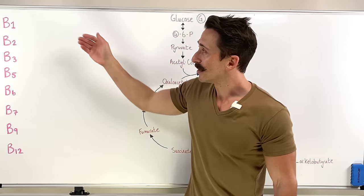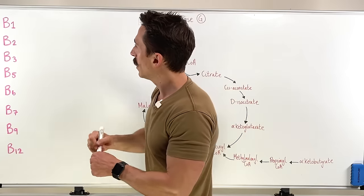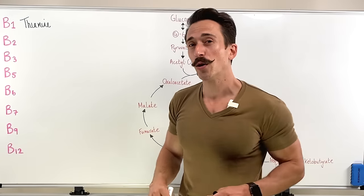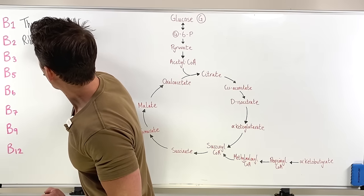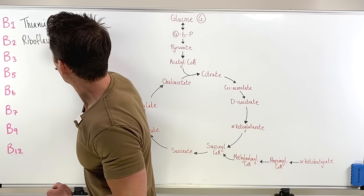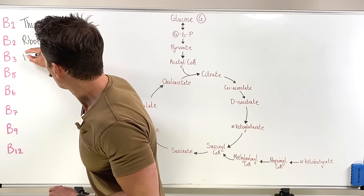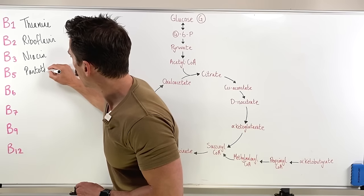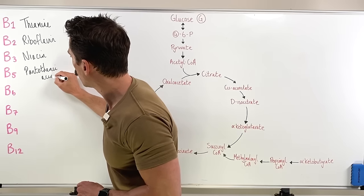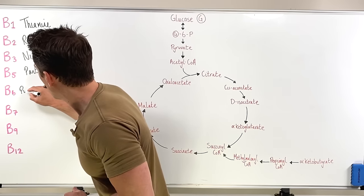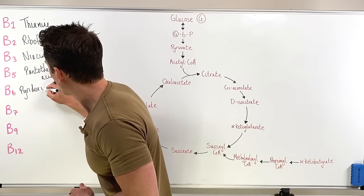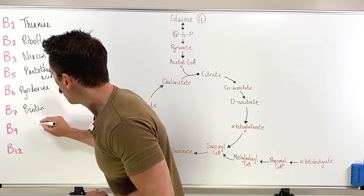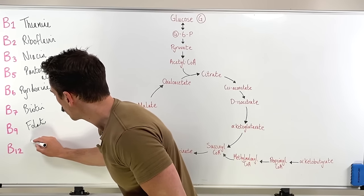Now let's talk about their names. B1 is also known as thiamine. B2 is known as riboflavin. B3 is known as niacin. B5 is known as pantothenic acid. B6 is known as pyridoxine. B7 is known as biotin. B9 is folate. And B12 is cobalamin.